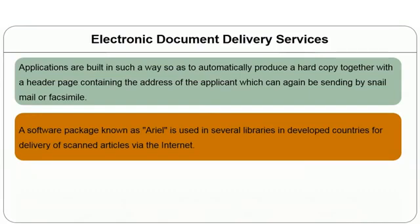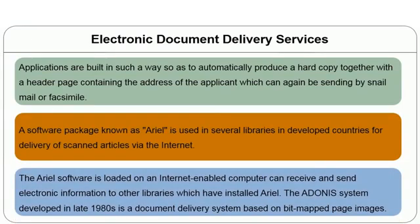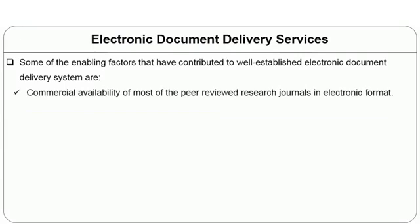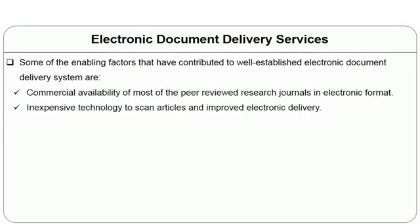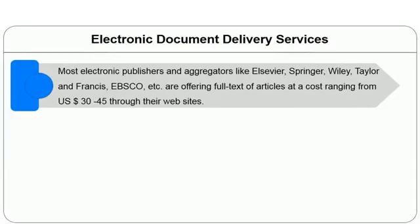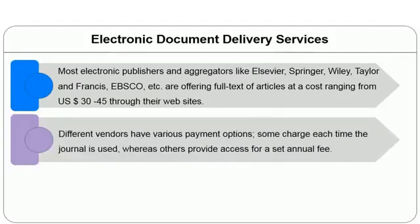Arial software loaded on an internet-enabled computer can receive and send electronic information. The Adonis system, developed in the 1980s, is a document delivery system based on bit-mapped page images. Most electronic publishers and aggregators like Elsevier, Springer, Wiley, Taylor & Francis, and EBSCO offer full text of articles at a cost ranging from $30 to $45 through their websites, with various payment options available.